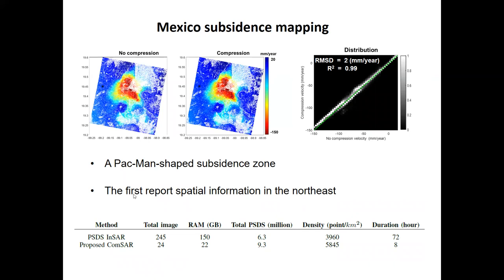Now let's take a closer look at the results. A back-mine subsidence zone is clearly visible. To our knowledge, this is the first time we can see the spatial information for this area. The joint distribution is shown here to facilitate comparison. A very strong correlation coefficient of 0.99 is achieved for 6.8 million common pixel cells. Instead of processing 240 images, we work on 24 compressed images and get even better performance.